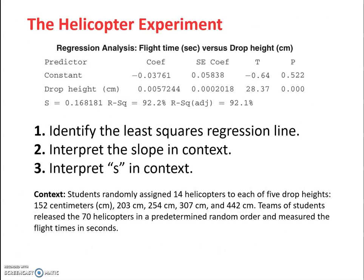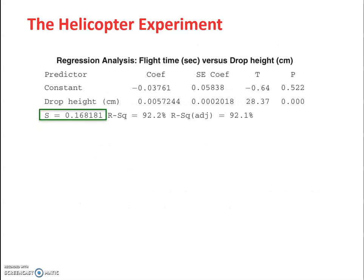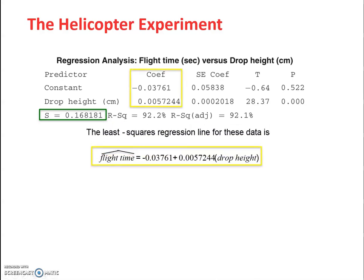Another example. The context here, students randomly assigned 14 helicopters to one of five different drop heights. Teams of students released the 70 helicopters in a predetermined random order and measured the flight times. We want to identify first what the least squares regression line is, interpret the slope, and also interpret s. So our s is right there.